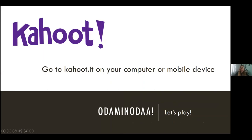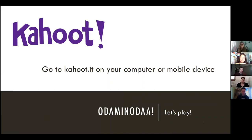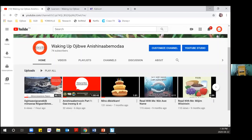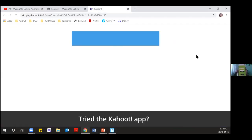Now we're going to play some Kahoot. It's better if you use your phone, but you can split your screen on your computer. Go to Kahoot.it — just type it into Google — and you'll get a colorful screen. Then on your phone type in the game pin and then your nickname to join.